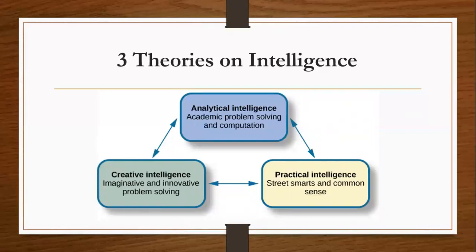The theory displayed on screen is the triarchic theory of intelligence, which establishes three facets to intelligence. You have analytical intelligence — your academic problem-solving abilities and computation skills. You have creative intelligence — your imaginative abilities and innovative problem-solving, how well you think outside the box. And you have practical intelligence — your street smarts, common sense, and critical thinking skills.